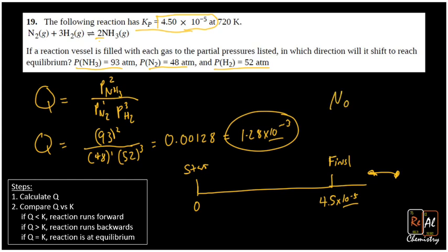No, it's not at equilibrium, and it needs to run backwards towards our reactants to get to equilibrium. It's overshot the finish line.